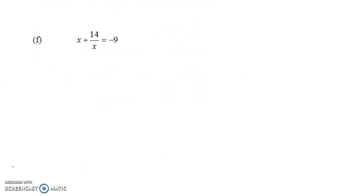And the last one that we're going to look at is x over, or x plus 14 over x equals negative 9. Now, notice we only have one denominator here, so let's multiply both sides of this equation by x. That's our denominator.